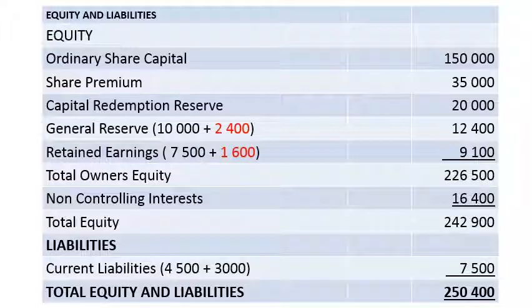In the equity and liabilities section, the key focus is on general reserves and retained earnings. From our analysis of equity for since-acquisition reserves, we add $2,400 to general reserves and $1,600 to retained earnings — these are H Limited's share of S Limited's post-acquisition profits only. NCI is also recognized. H Limited's liabilities are added, and that completes the consolidated balance sheet for Example 3.2.